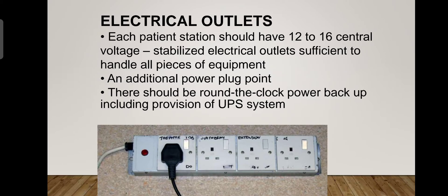Each patient station should have 12 to 16 central voltage-stabilized electrical outlets, sufficient to handle all the equipment used — such as cardiac monitors, infusion pumps, pulse oximeters, and artificial ventilators. There should also be an additional power plug point and round-the-clock power backup, including the provision of a UPS system, that is an Uninterrupted Power Supply system.